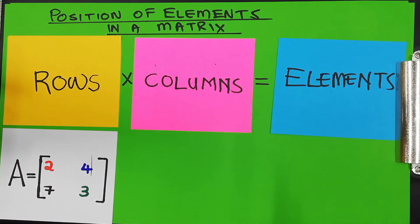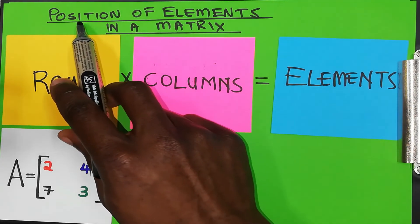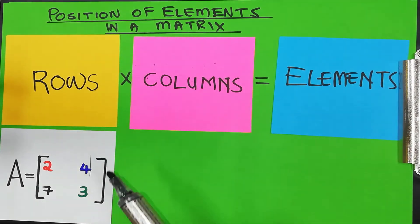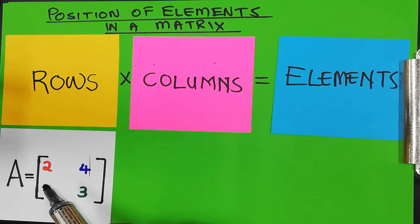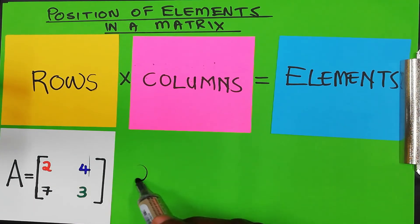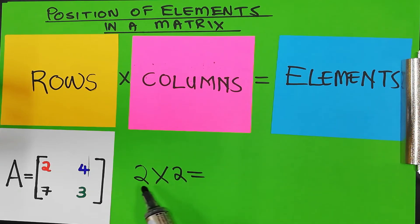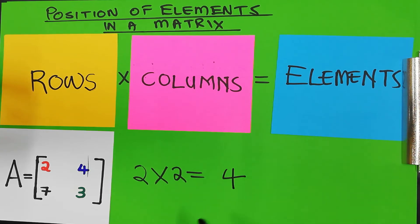On the previous slide we discussed the order of a matrix. Now let's talk about the position of elements in a matrix. You would recall that matrix A is a two by two matrix. Two by two — or two multiplied by two — gives you four.